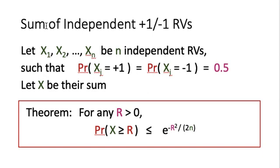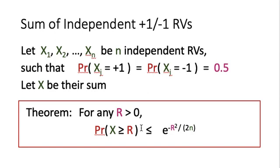For the first one, we look at the sum of independent plus or minus 1 random variables. We assume x1, x2, ..., xn where for each xj, the probability that xj equals plus 1 and the probability that xj equals minus 1 are both 0.5. Let x be the sum of these independent random variables. We claim that for any r greater than 0, the probability that x is greater than or equal to r will be less than or equal to e to the power minus r squared divided by 2n.